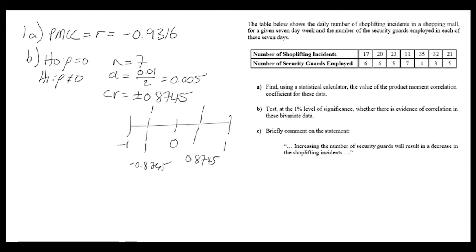If our calculated PMCC falls within these shaded regions, then we have a significant result. That means our calculated correlation was stronger than the critical value correlation. So let's place this on the number line.